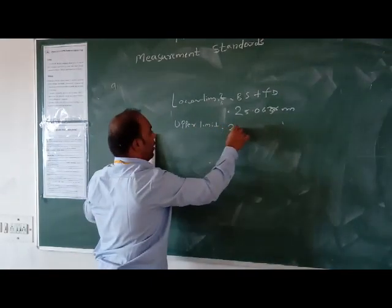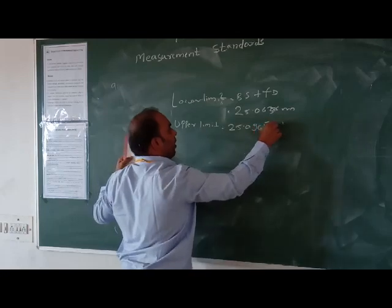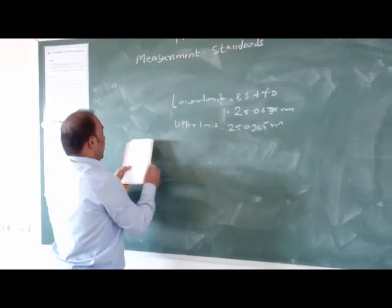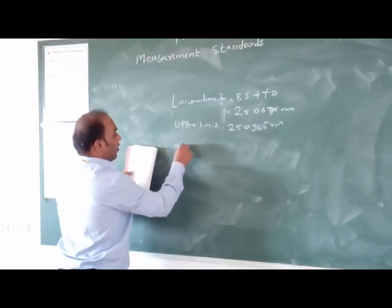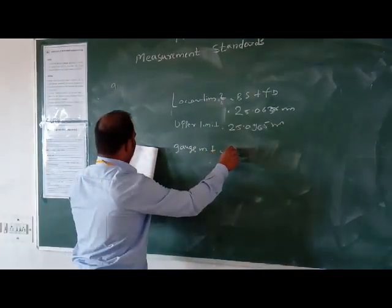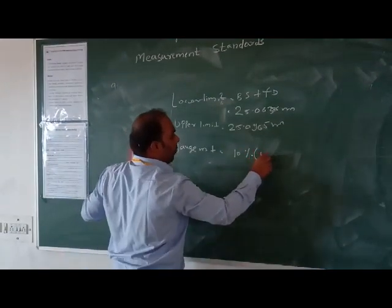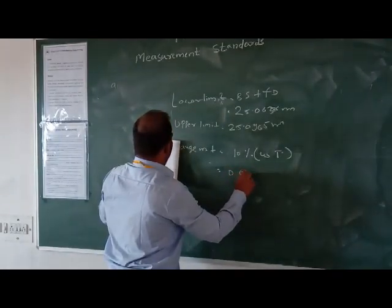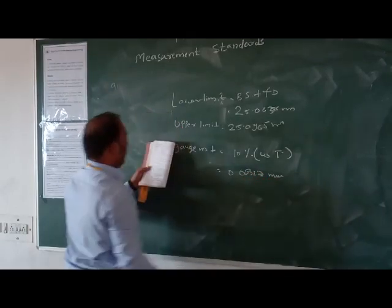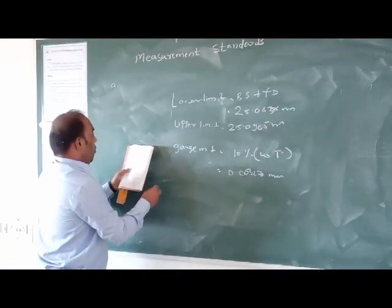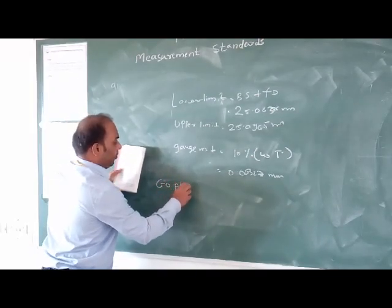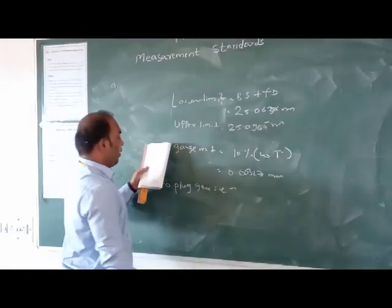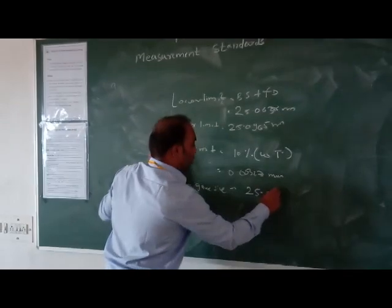Therefore, gauge maker tolerance is 10% of work tolerance, which equals 0.00327mm. Go gauge size will be 25.064mm.